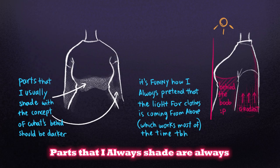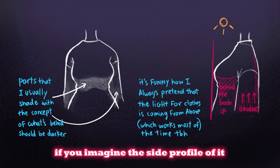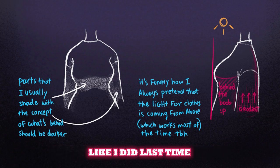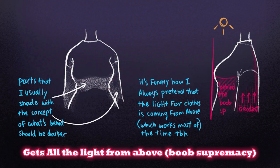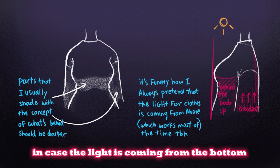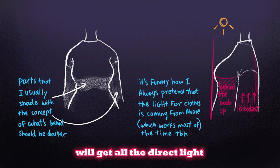Let me explain where I usually shade before we move to other steps. The parts I always shade are always something like on behind — if you imagine the side profile, the front gets all the light from above and hides what's under it, which is why I shade underneath. This might not work if the light is coming from the bottom, which would just flip the concept.